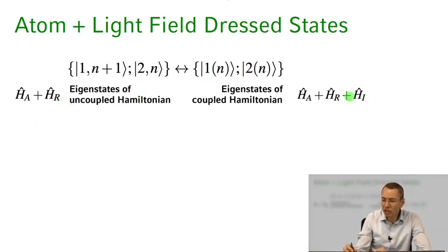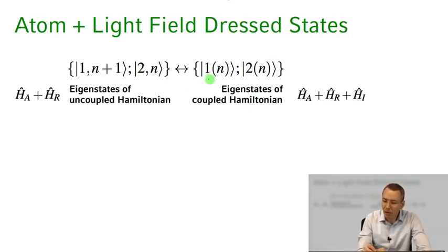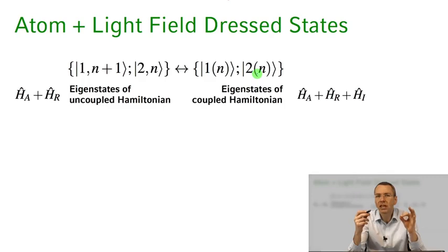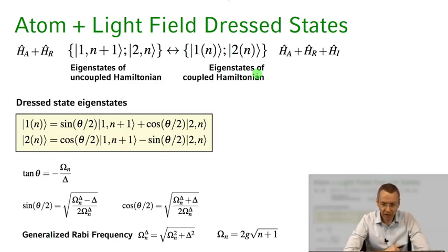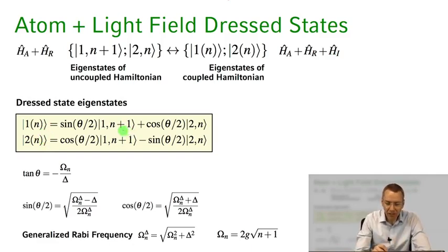In this uncoupled basis with no interaction between the light field and the atom, we have the eigenstates |1, n+1⟩ and |2, n⟩ for all n. But if we add the interaction Hamiltonian H_A, H_R, and H_I and ask what are the new eigenstates, they can be labeled as superposition states of the uncoupled basis states. We call them |1(n)⟩ and |2(n)⟩ — they are formed out of linear superposition states from the manifold E(n), with a so-called mixing angle theta.